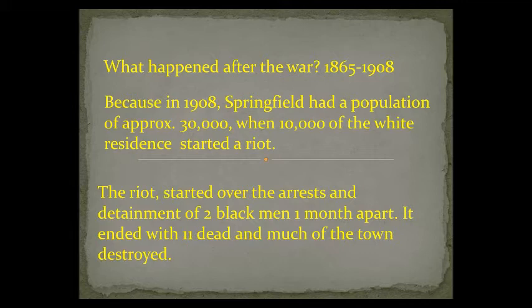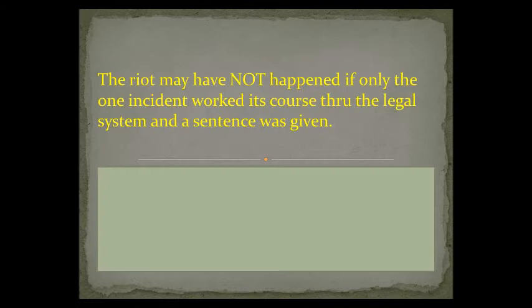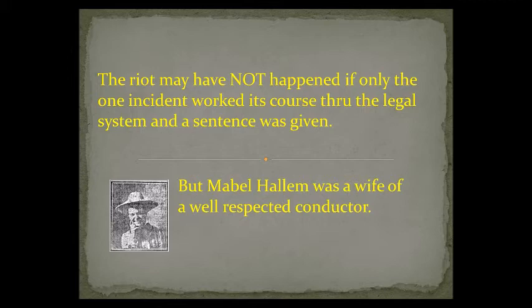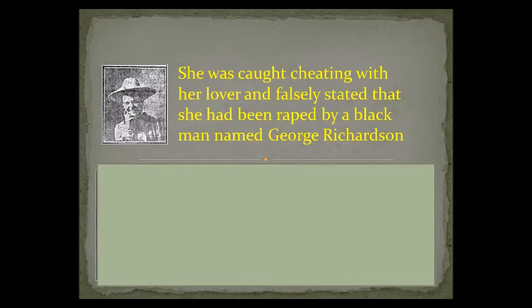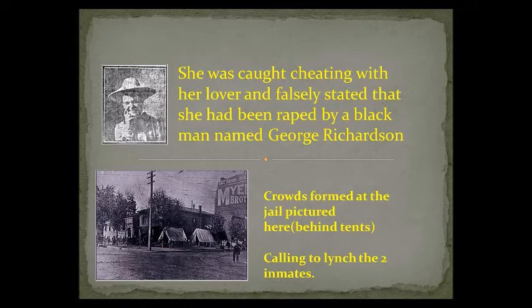Because later, way later, in 1908, Springfield had a population of about 30,000 people when 10,000 of the white residents started a riot. The riot started over the arrest and detainment of two black men about one month apart, and it ended with 11 dead and much of the town destroyed. Many historians believe the riot may have not even happened if only the first incident had worked its course through the legal system and a sentence was given. But there was a lady named Mabel Hallam — she was the wife of a well-respected conductor.